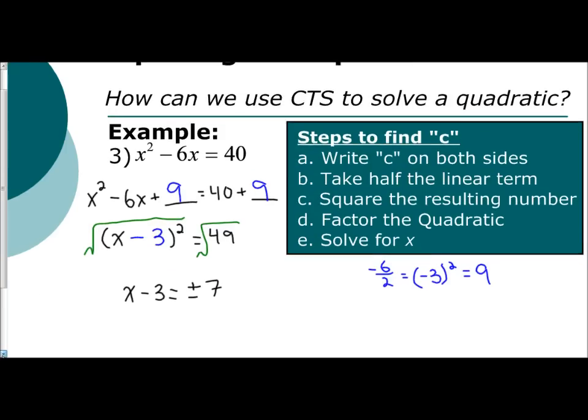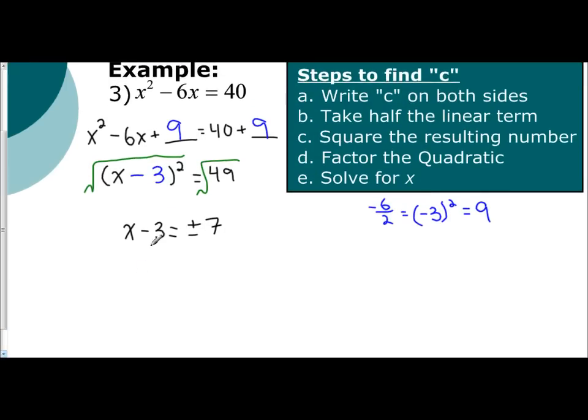And so now if I want to solve for x, I have a minus 3 here. So I'm going to have to move it to the other side. So x minus 3 goes plus or minus 7. I'm going to add 3, so it becomes a positive 3. And I'm going to put that in front of the plus or minus 7. And so what this tells me is my answer.